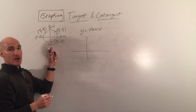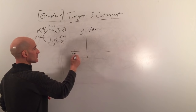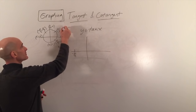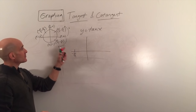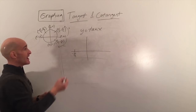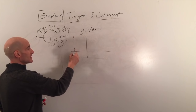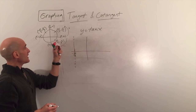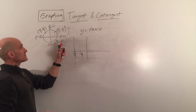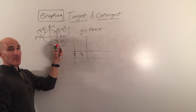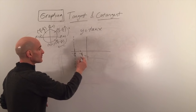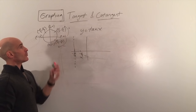Starting at negative pi over 2, tangent is y over x which is negative 1 divided by 0 — undefined — so we get a vertical asymptote. At negative pi over 4, tangent is negative square root 2 over 2 divided by positive square root 2 over 2, which gives negative 1. At 0, tangent is 0 over 1, which equals 0.